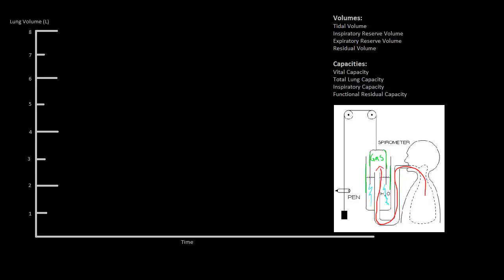When a patient exhales, gas will travel the other direction — out of the lungs, out of the tube, and into the gas enclosure. When a patient inhales, the gas that leaves the enclosure will drop the top bowl, and through a pulley system cause the pen to rise on the paper, giving us an uptick on the graph. The opposite is true when a patient exhales: gas enters the chamber, the bowl rises, and through the pulley system the pen drops on the paper, giving us a downtick.